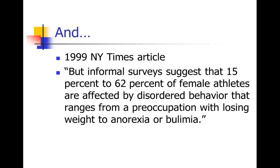Interestingly, as I was Googling this, I found a 1999 New York Times article that actually got the closest to getting it right. They said 'informal surveys suggest that 15% to 62% of female athletes are affected by disordered behavior that ranges from a preoccupation with losing weight to anorexia or bulimia.' That word 'informal surveys' is actually right on the money — some fact checker at the New York Times actually went back and found those original sources. A publication like the New York Times has a fact-checking department; unfortunately, a lot of journals don't, and so these things slip through.